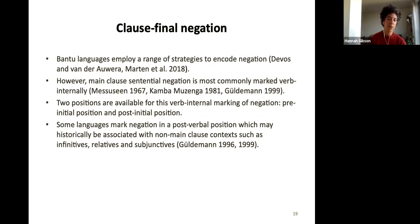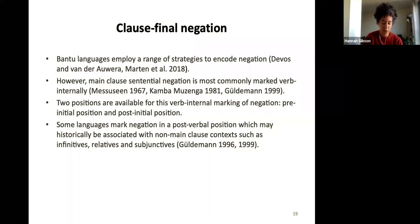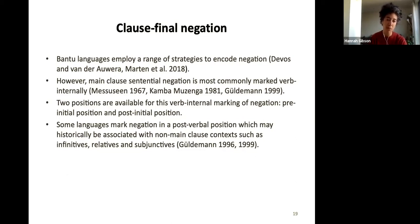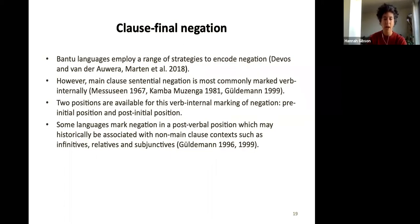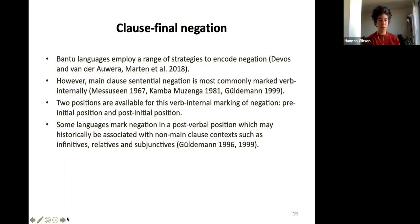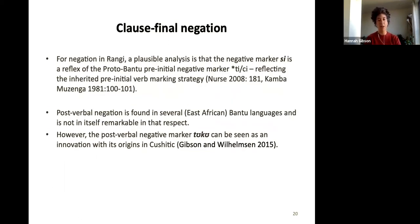People have noted that Bantu languages use a wide range of strategies to encode negation. Main-clause sentential negation is most commonly marked verb-internally. Two positions are available for this kind of verb-internal marking: pre-initial position before the subject marker, and post-initial position after the subject marker, but still within the verb form. Some languages mark negation in a post-verbal position, and these are also historically associated with non-main-clause contexts — relative clauses are quite widespread in this regard.